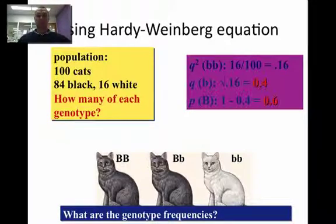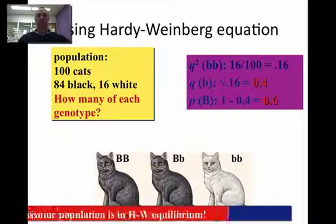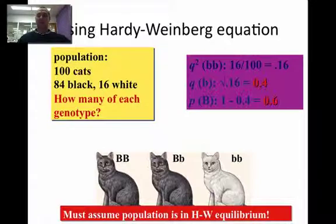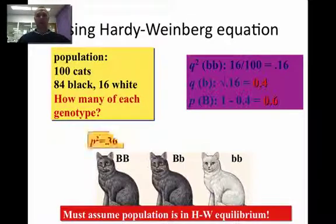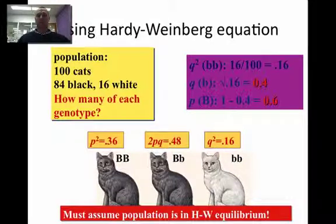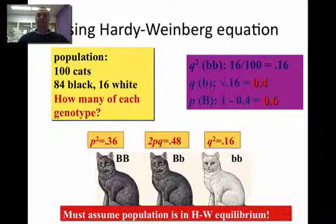So little b is going to occur 40% of the time, and big B is going to occur 60% of the time in the population. This has to assume, though — make sure you understand — that all five conditions I mentioned are not occurring. And there are our totals: p squared is 0.36, 2pq is 0.48, and q squared is 0.16. So 48% — I could tell you that 48 of those 84 black cats were actually heterozygous.